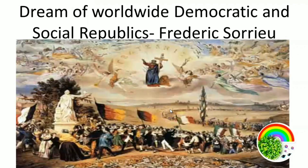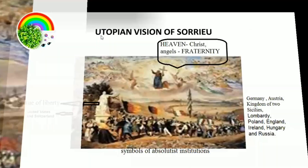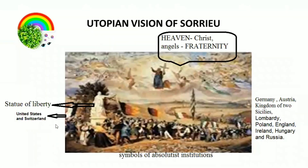This is the introductory screen. What you are seeing is a diagram or an artwork which was created by Frederick Soria, and he called it 'Dream of Worldwide Democratic and Social Republics.' The Statue of Liberty is shown here and people are marching from very far and coming to give their respect to the statue.